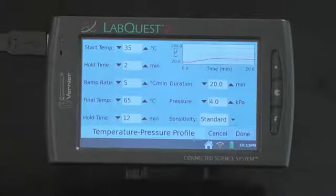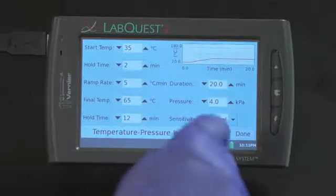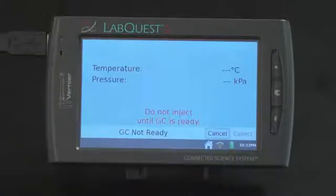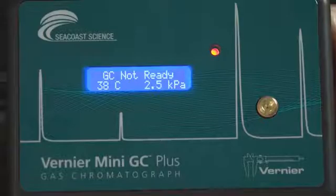Data collection will end after 20 minutes. Make sure the duration of the run is long enough to ensure all the compounds have passed through the column. Select Done to initiate Mini-GC Warm-Up. A new message will appear. Do not inject until GC is ready and the LED on the Mini-GC Plus will be red. The Mini-GC will take a few minutes to warm up and stabilize.